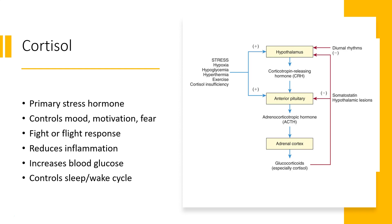Cortisol, which is made by the adrenal gland, is our primary stress hormone. Cortisol controls mood, motivation, and fear. It helps increase our fight-or-flight response. It also has anti-inflammatory properties where it reduces inflammation. It increases our blood glucose when blood glucose levels get low, and cortisol controls our sleep-wake cycle.